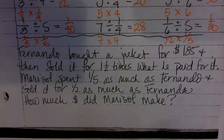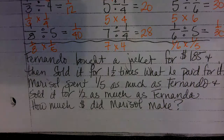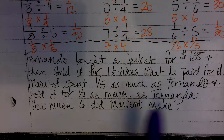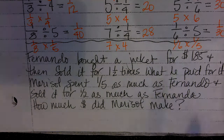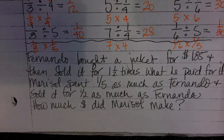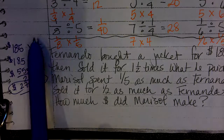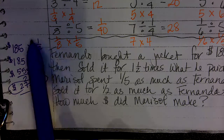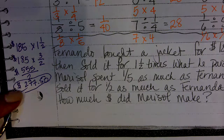Where are we going to start on this problem? We need to know how much Marisol made based on Fernando's jacket. Marisol spent one-fifth as much as Fernando and sold it for half as much as Fernando, so we have to start with Fernando first. Fernando bought the jacket for $185 and sold it for one and a half times that, which is 185 multiplied by 3/2 — because you have to convert the mixed number to an improper fraction. That gives us 555 divided by 2, which is $277.50.